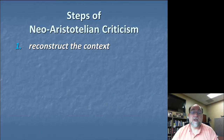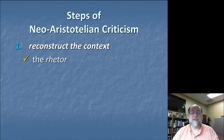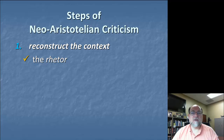So the first step of neo-Aristotelian criticism is to reconstruct the context. When we're trying to figure out about the context, there are a few things we're going to need to explore. We'll probably want to get information about the rhetor, or the persuasive communicator. What do we know about this message source? What do we know about their background? What are they trying to achieve in this particular context? Do they have any specific goals, objectives, or problems they're trying to solve?